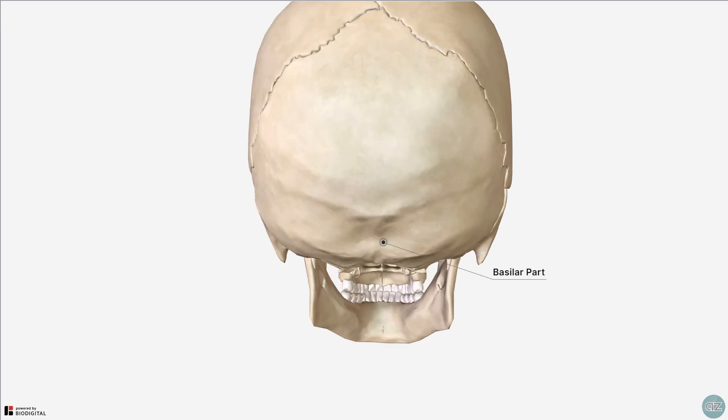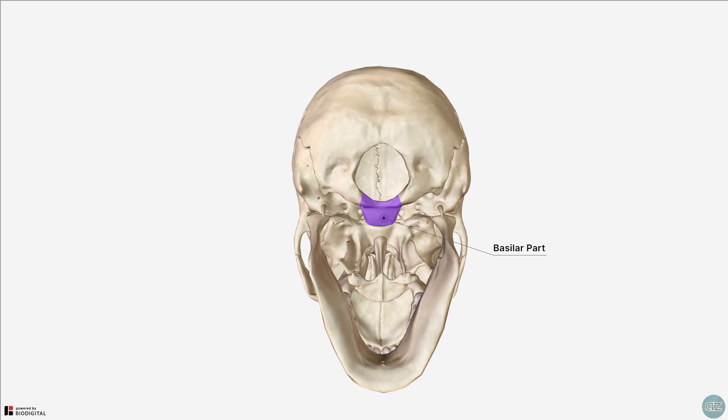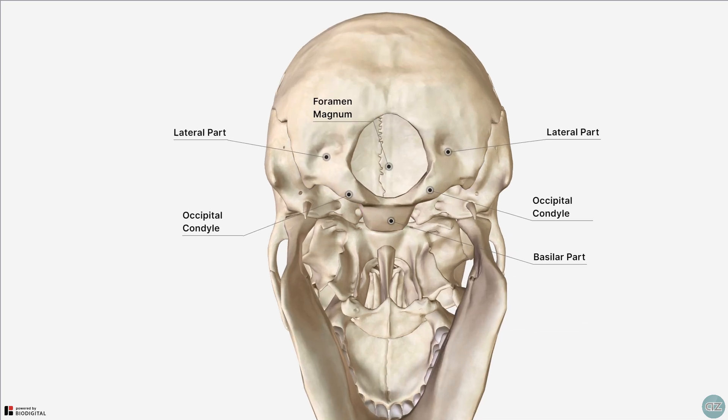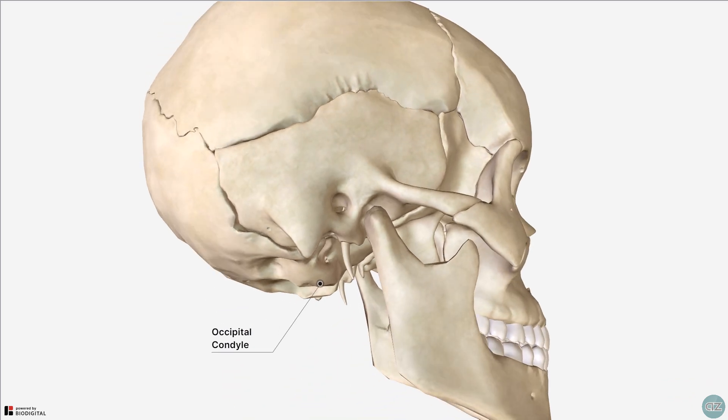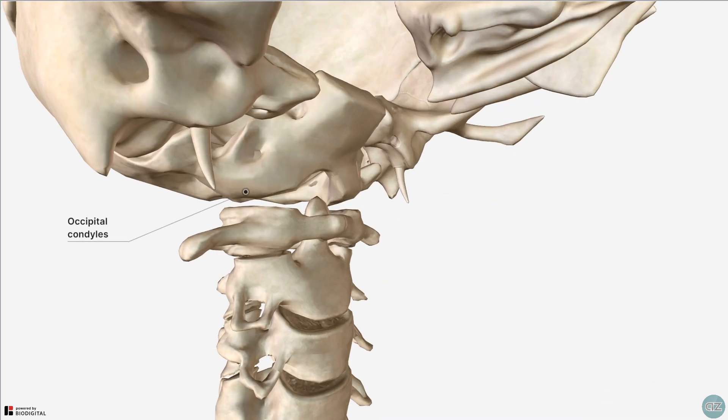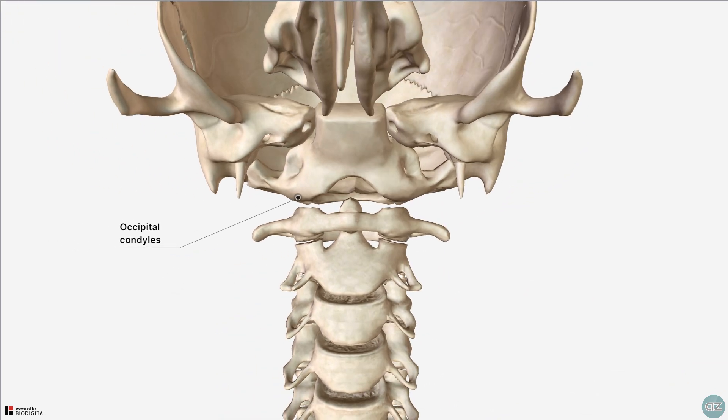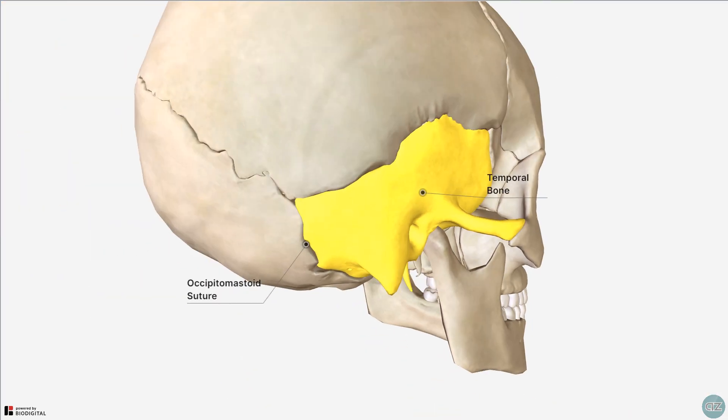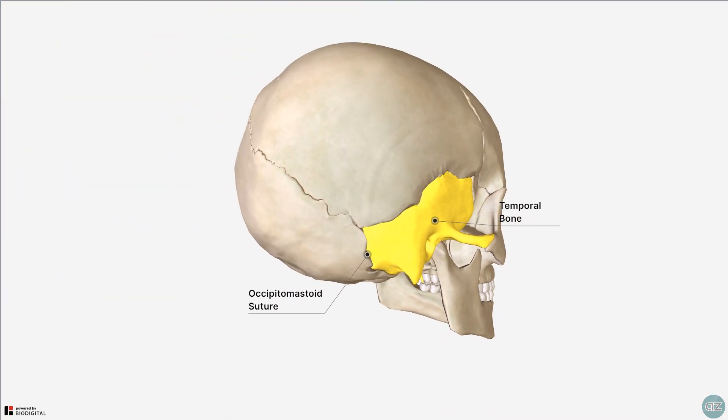The inferior aspect of the occipital bone consists of the basilar part, anterior to the foramen magnum, and the lateral parts lie lateral to the foramen magnum. The occipital condyles here are these two large protuberances which allow the cranium to articulate with the vertebral column. As well as the articulation with the parietal bones, the occipital bone articulates with the temporal bone anteriorly at the occipitomastoid suture.